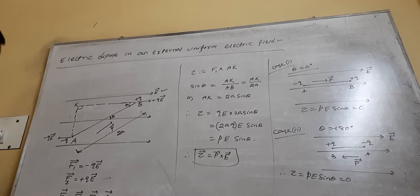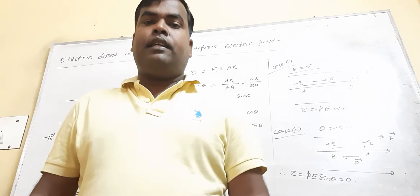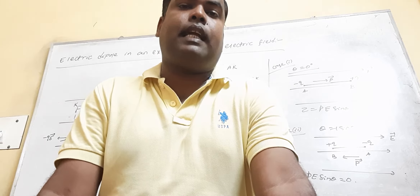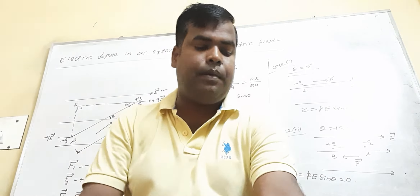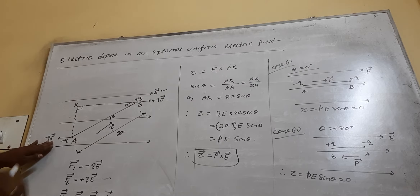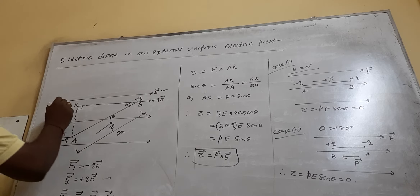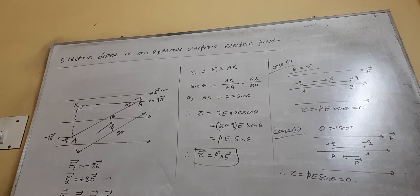Upon the plus Q charge, by similar argument, the force is towards the right — that is, F2 vector equals plus QE vector. So what is the net force? Net force F equals F1 plus F2, that is minus QE plus QE, which equals zero. That means the net force acting upon an electric dipole in a uniform electric field is zero. If force is zero, according to Newton's law, the body is in translational equilibrium — meaning the electric dipole either remains at rest or moves with uniform velocity.